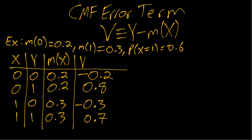So you can see this v, this CMF error term, is a random variable in the sense that it can take different possible values, and there's some probabilities associated with each value.